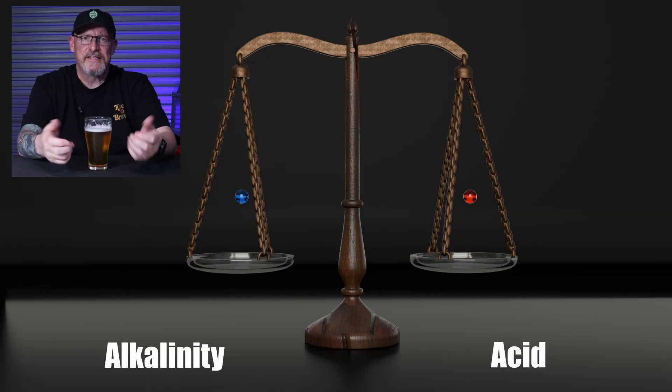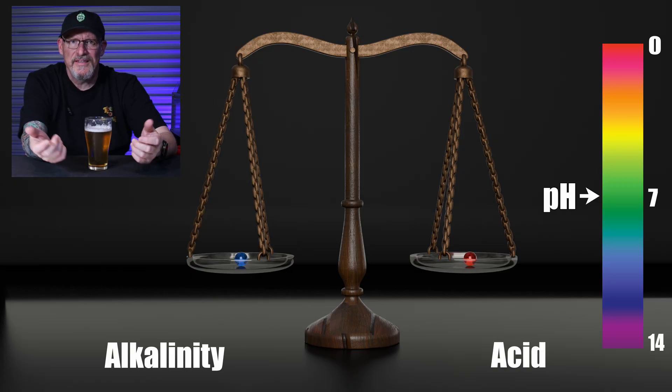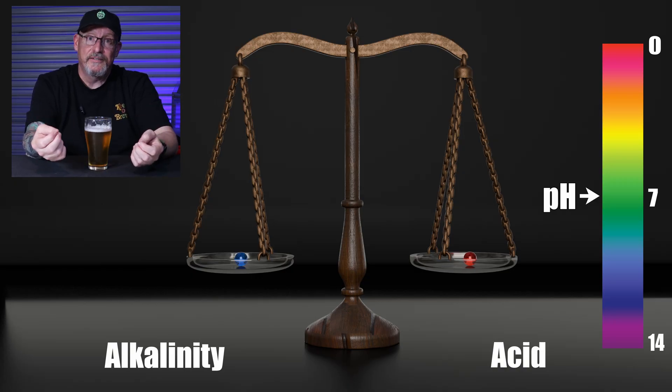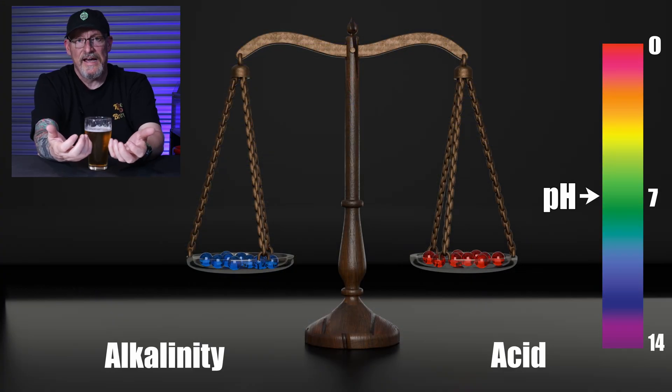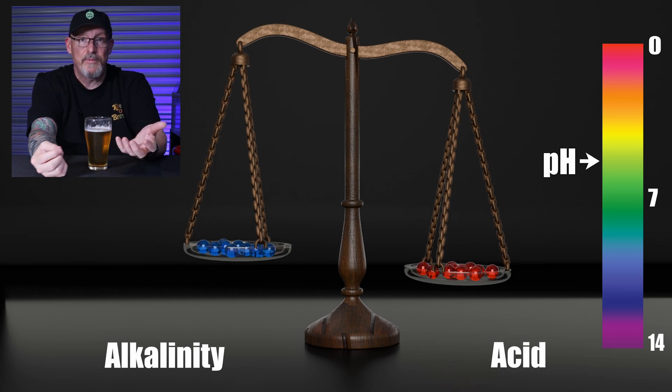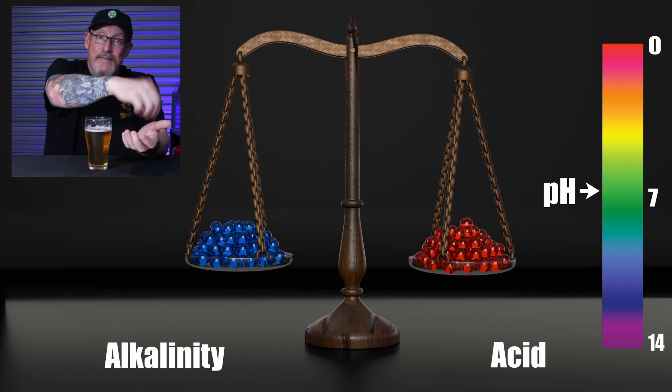The marbles analogy. Imagine marbles — red marbles are acid, blue marbles are alkaline. One red and one blue gives you a neutral balance, but the alkalinity is tiny, so one more red marble would shift pH dramatically. If we had 10 red and 10 blue, still neutral at pH 7, adding one red marble moves pH only a little bit. If we had 100 red and 100 blue, still pH 7 neutral but alkalinity is huge — adding one red marble barely moves pH at all. So pH is the balance and alkalinity is the amount.